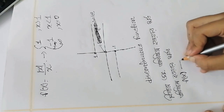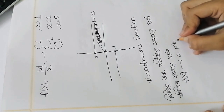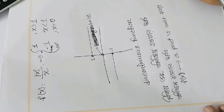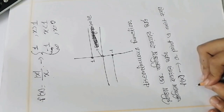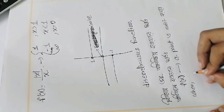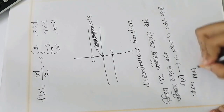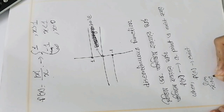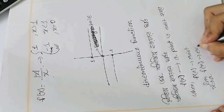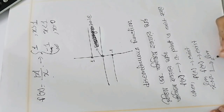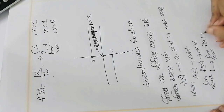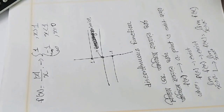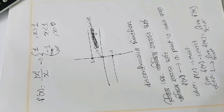At a breaking point, we check: if f(a) exists, that condition is satisfied. When the functional value exists and the limiting value also exists, we need both the left-hand limit as x approaches a and the right-hand limit as x approaches a to be equal.